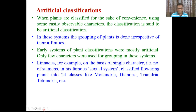Linnaeus classified all known flowering plants into 24 classes named as Monandria, Diandria, Triandria, Tetrandria, Pentandria, Hexandria, Heptandria, Octandria, Enneandria, Decandria, and so on - 24 classes. The basic character is just the number of stamens. Just one character is used for classification.